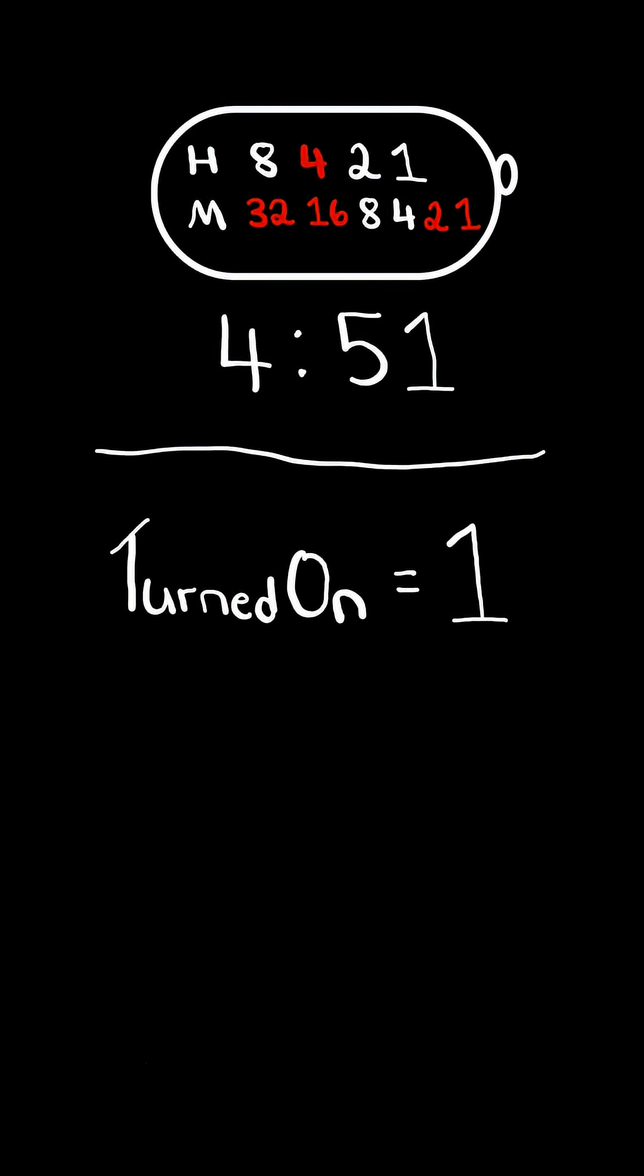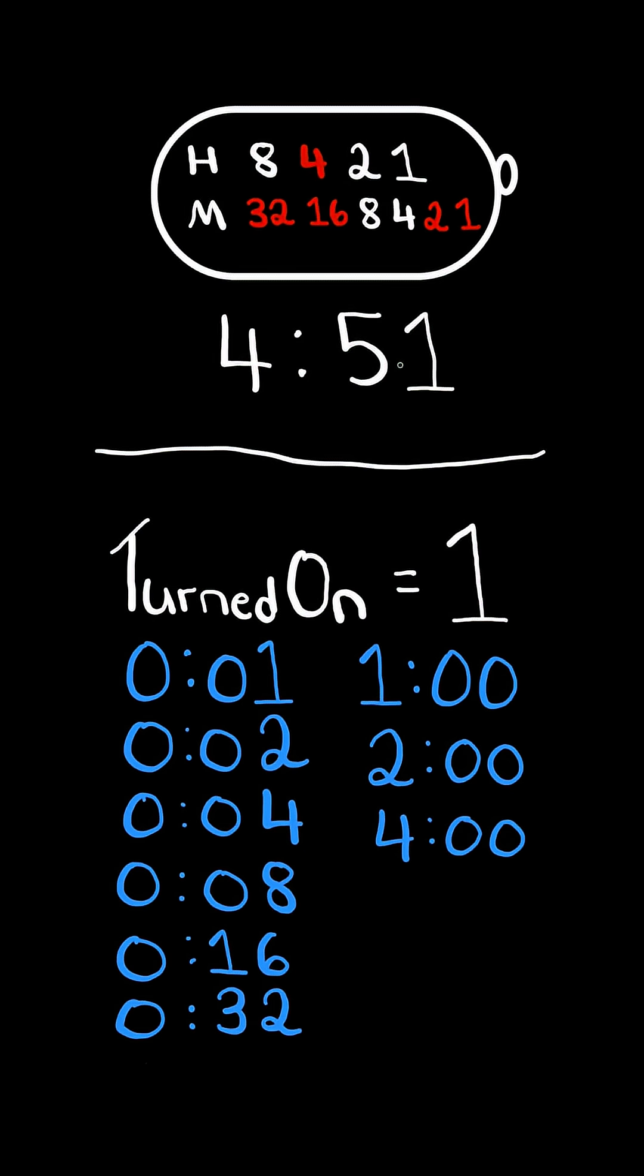Now let's continue to the problem. We are given an integer turned on, which represents the number of LEDs currently on, and we want to return all possible times the watch could represent with that amount of LEDs turned on.